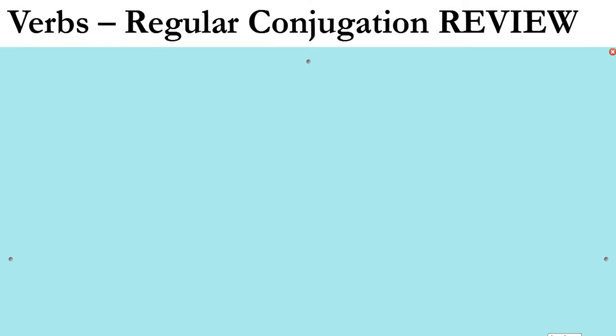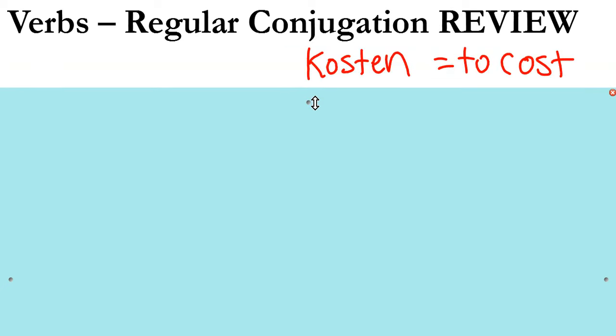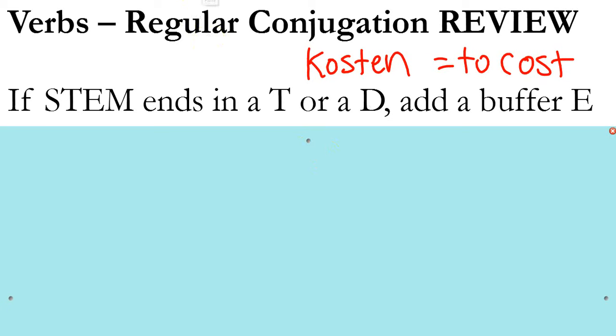Verb conjugation with regular verbs - this is a review. First, let's take a look at what we know about verbs. In German, we typically learn them in an infinitive form, so 'kosten' - the infinitive form is 'to cost'. Infinitives have what's called a stem. The stem is basically the main part of the verb minus the EN ending. So in the verb 'kosten', the stem is 'kost', EN is the infinitive ending.